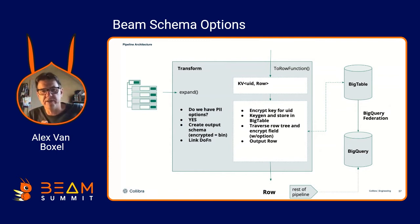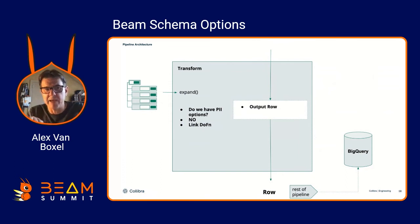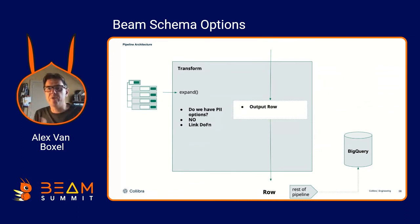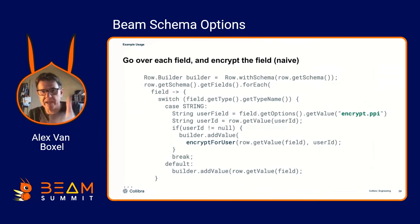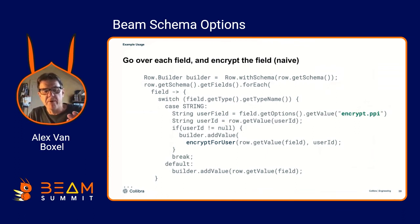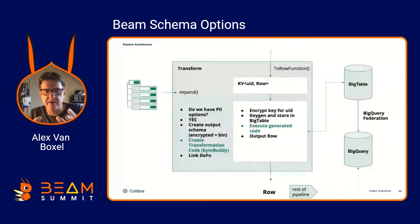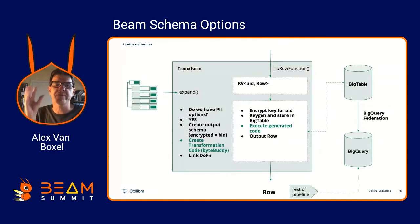If you give it a schema without any personal information, this is just a pass-through — it doesn't use any compute to walk the complete tree. This is a naive implementation where you iterate over the row, find fields annotated as encrypted, get the user, and encrypt that field with the appropriate key. This is naive, but you can optimize it by generating code — it's trickier, but start naive and optimize later.